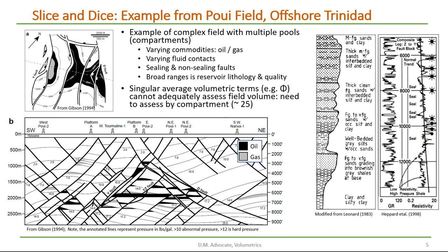Before doing the volumetric analysis, we'll need to make a geologic description of the field. In this case, we'll take a look at Pui Field from offshore Trinidad. It appears to have five fault blocks, with oil on the eastern half of the field and oil in a gas cap on the western part. But as we look at the cross section, we can see that the field is highly compartmentalized by faults.